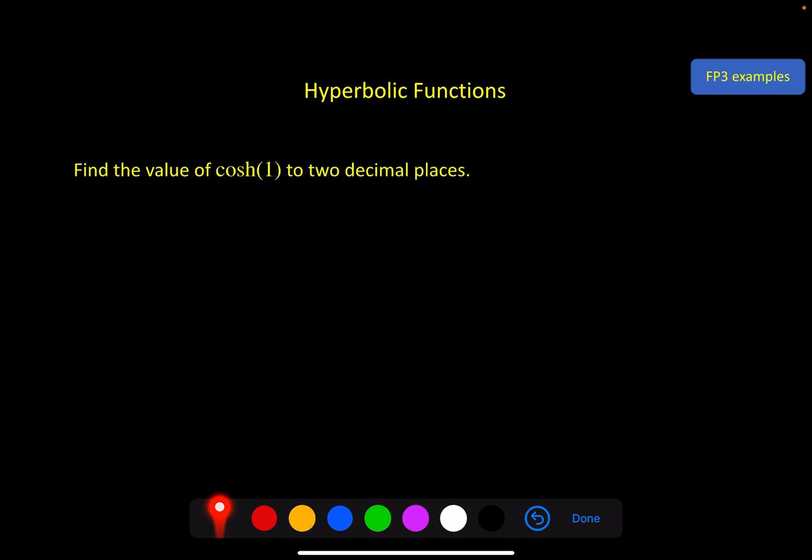And that's it for the first video. Those are our definitions, so let's just go through a few quick examples. Find the value of cosh 1 to two decimal places. Now cosh 1, if we use our definition, we've got e to the x plus e to the minus x divided by 2, and if you put x is equal to 1 in that expression, you get e to the 1 plus e to the minus 1 divided by 2, at which point you can grab your calculator, and I hope that you agree with me that to two decimal places that is 1.54.